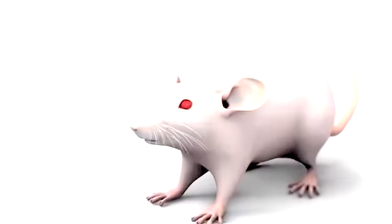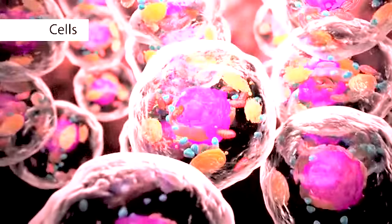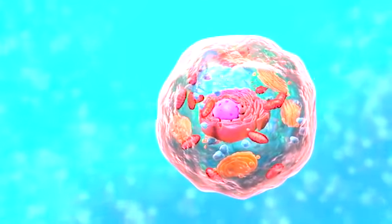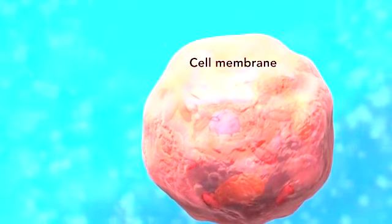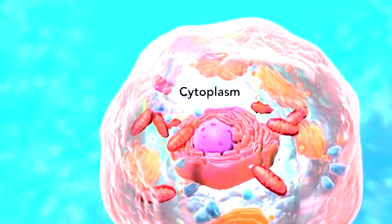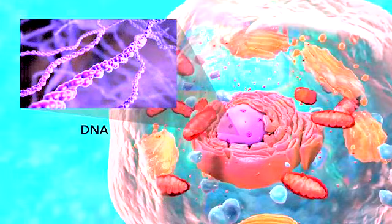Cells are the smallest living units of an organism. All cells have three things in common no matter what type of cell they are. All cells have a cell membrane which separates the inside of the cell from its environment, cytoplasm which is a jelly-like fluid, and DNA which is the cell's genetic material.